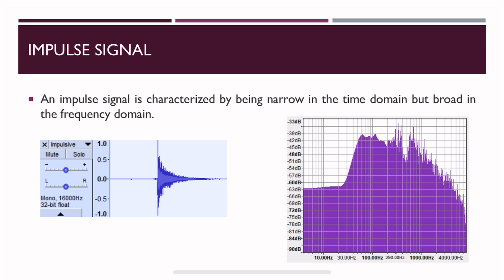An impulse signal is narrow in the time domain but broad in the frequency domain. When we use an impact hammer and strike an object, we give an impulse signal, which means the frequency response is broad — we're exciting with a broad range of frequencies simultaneously. If we excite from 0 to 1000 Hz, for example, and the structure has a natural frequency somewhere in that range, it will respond to that specific frequency.